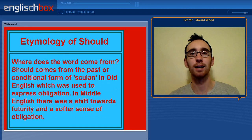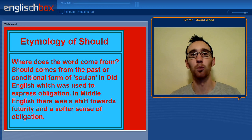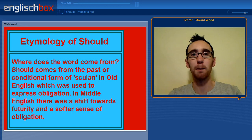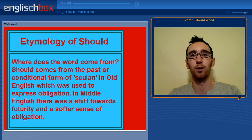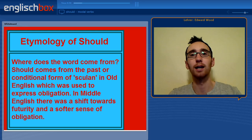Let's begin by looking at the etymology of the word. Sometimes it's a good thing to understand where the word came from in order to understand what the word means today. Should comes from the past or conditional form of the Old English word 'scullen'. Scullen was used to express obligation in much the same way must or have to are used today. In Middle English, the meaning moved away from the strong sense of obligation to a softer sense of obligation and futurity.